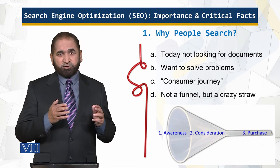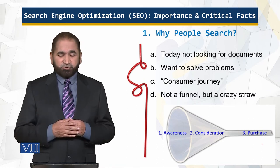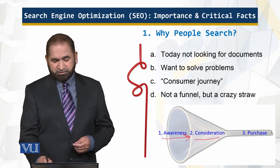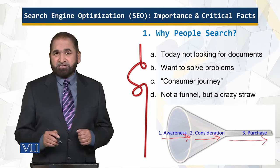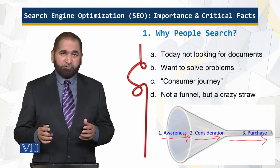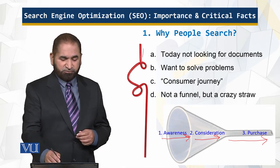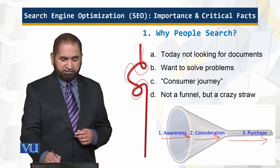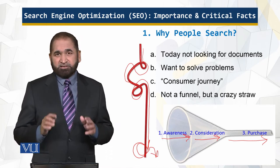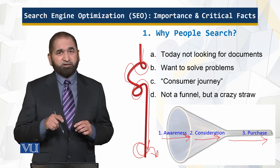So there is a consumer journey which marketers have given a fancy name — it starts from what the user wants and ends at what the user gets. Traditionally it used to be a funnel, a linear path: awareness, consideration, purchase. That is not the case anymore. In the next module I will show you more details, but now this journey is not like a funnel — it is like a crazy straw, going in all directions. It is a complex journey driven by the user using the search engine.